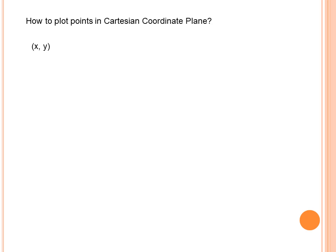Every point in the coordinate plane can be described by an ordered pair in the form (x, y). Any point in the Cartesian plane is known as an ordered pair or coordinates. So we have two names — ordered pair and coordinates. In the ordered pair, we have two variables: x and y.